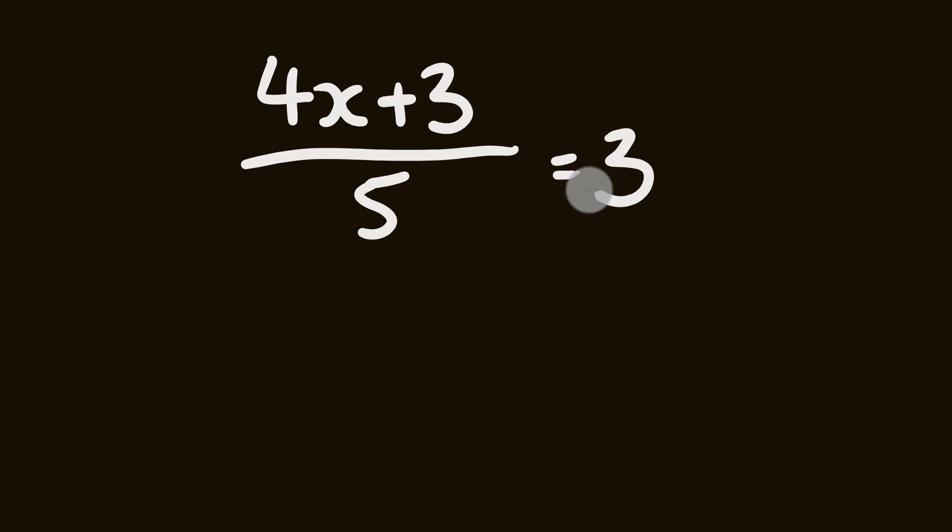We'll start with this example here. We'll have 4x plus 3 divided by 5 is equal to 3. Now the way we're going to solve this is as follows. We're going to start with the answer and then work our way backwards.